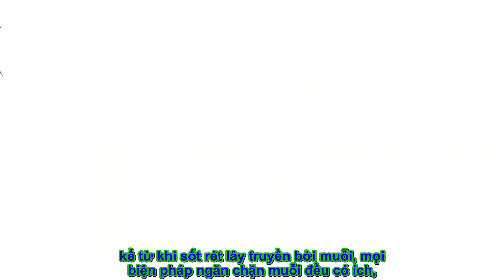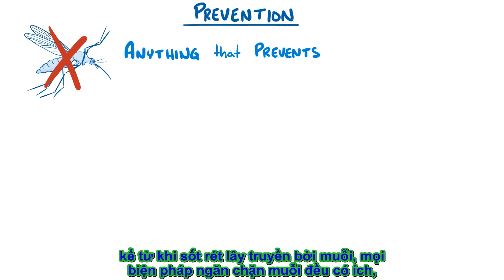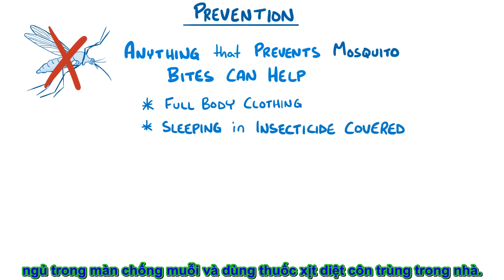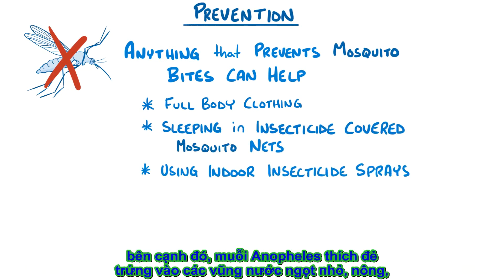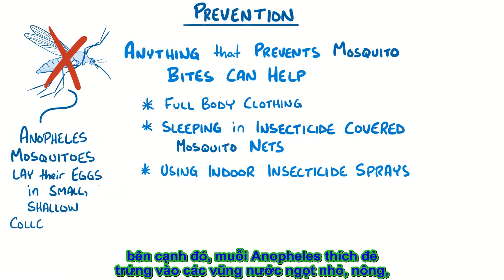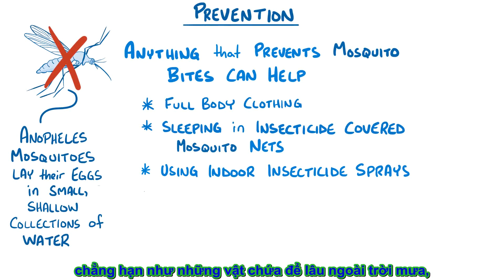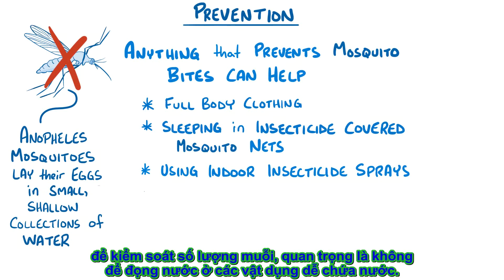Since malaria is spread by mosquitoes, anything that prevents mosquito bites can help, like full body clothing, mosquito repellent, sleeping in insecticide-covered mosquito nets, and using indoor insecticide sprays. In addition, Anopheles mosquitoes like to lay their eggs in small, shallow collections of fresh water, like containers sitting outdoors during the rainy season in tropical countries. To control the mosquito population, it's important to empty out these containers and any other stagnant collections of water.